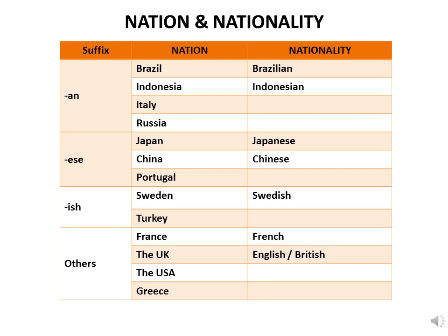There is also the suffix '-ish.' For example, the nation Sweden gives the nationality Swedish, and Turkey gives Turkish. There are also countries that don't use a certain suffix, which I categorize as 'suffix others.' For example, France gives the nationality French. The United Kingdom gives the nationality English or British.